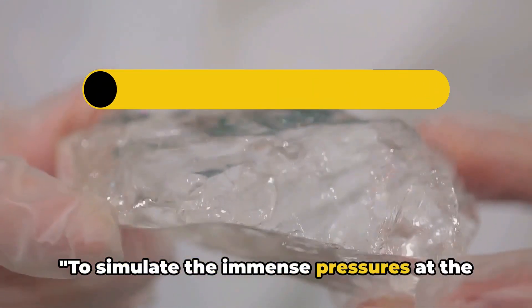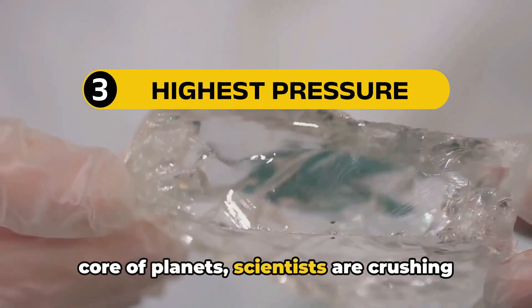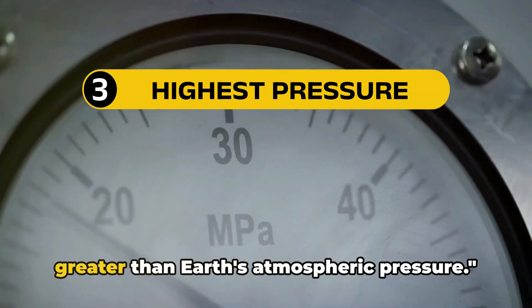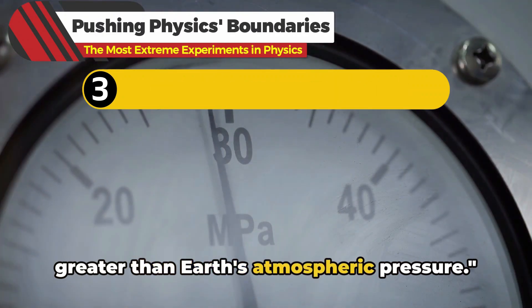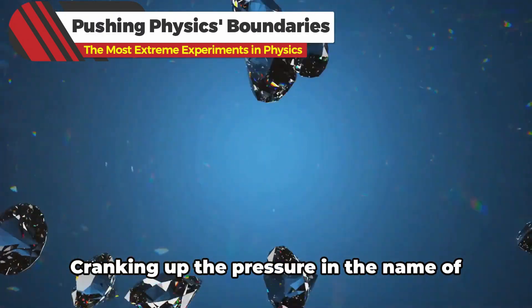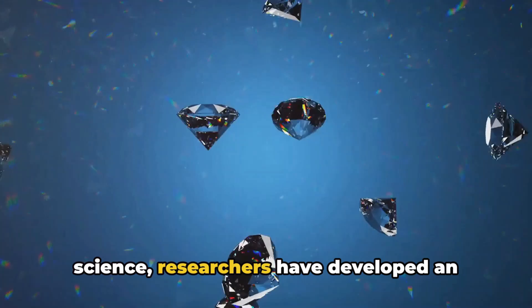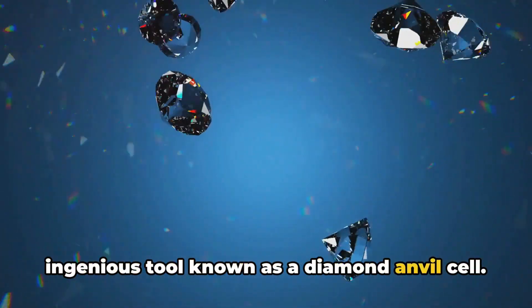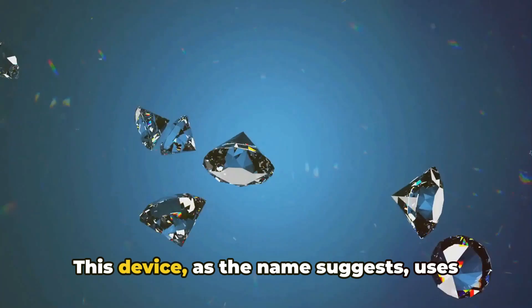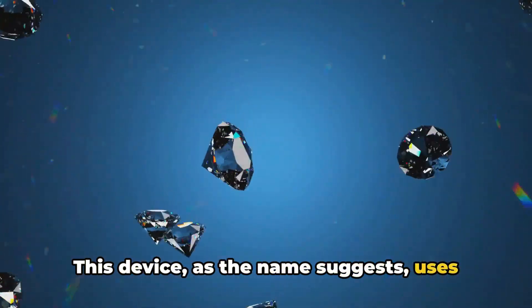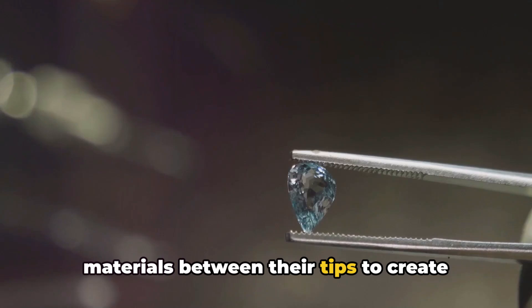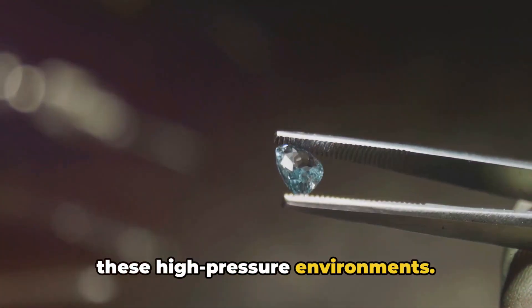To simulate the immense pressures at the core of planets, scientists are crushing materials with pressures millions of times greater than Earth's atmospheric pressure. Cranking up the pressure in the name of science, researchers have developed an ingenious tool known as a diamond anvil cell. This device uses two diamonds to squeeze tiny samples of materials between their tips to create these high-pressure environments.